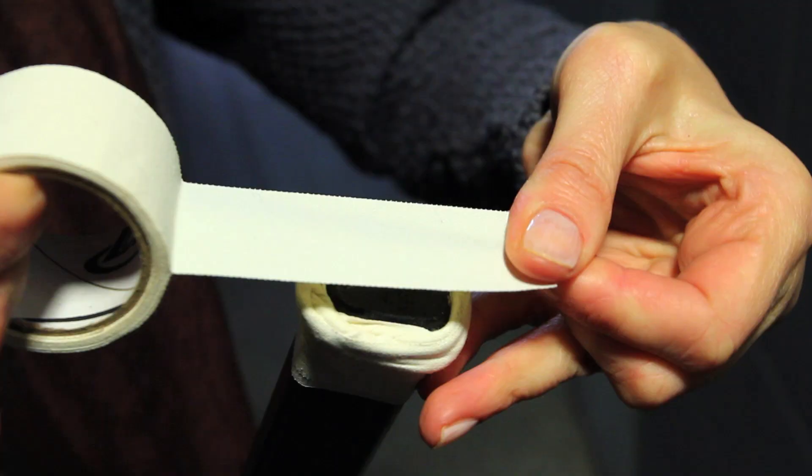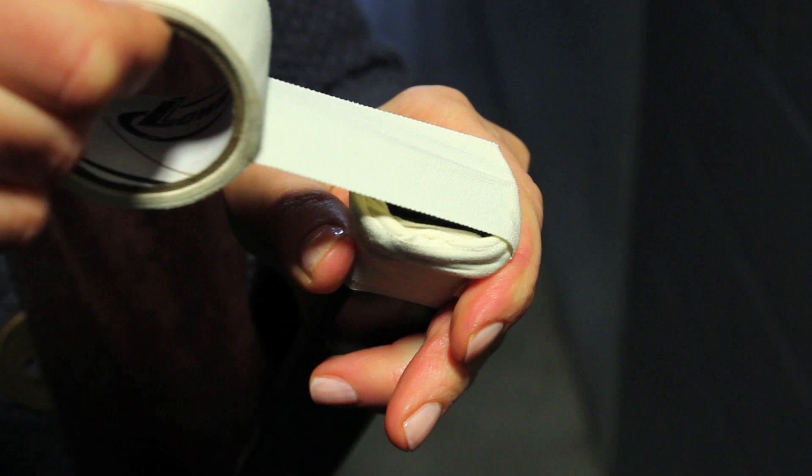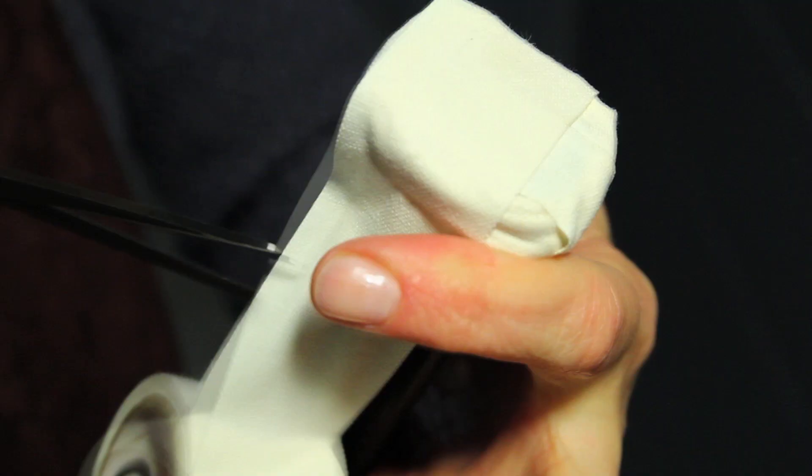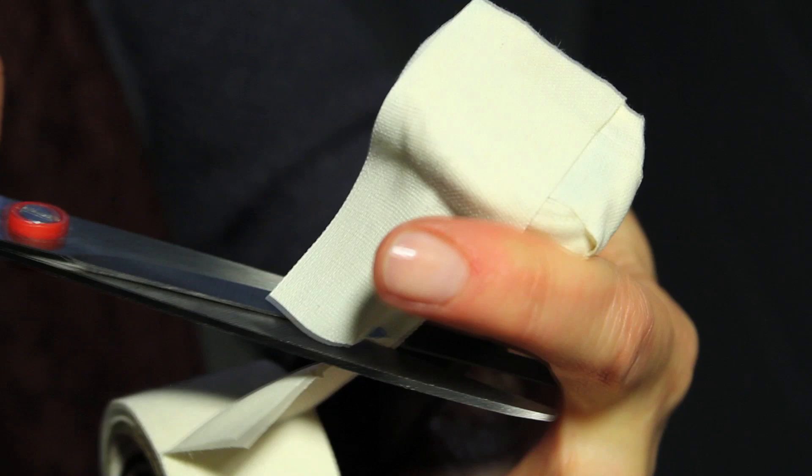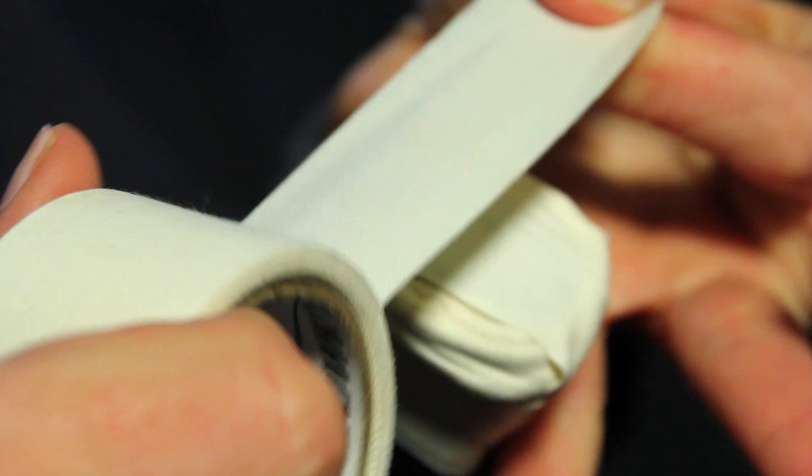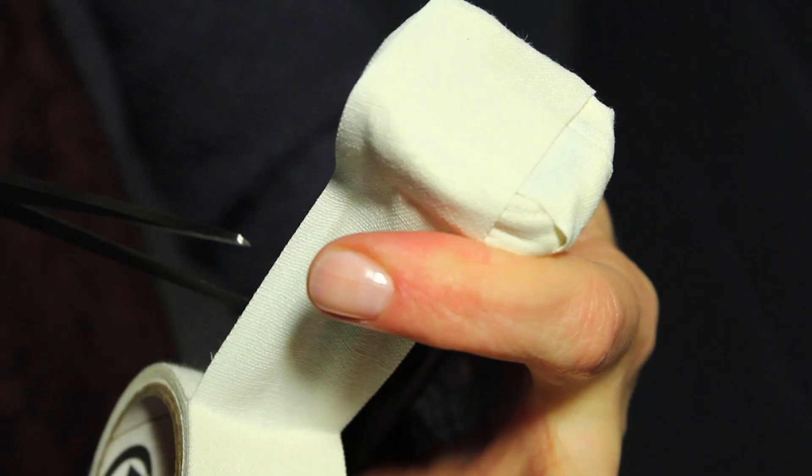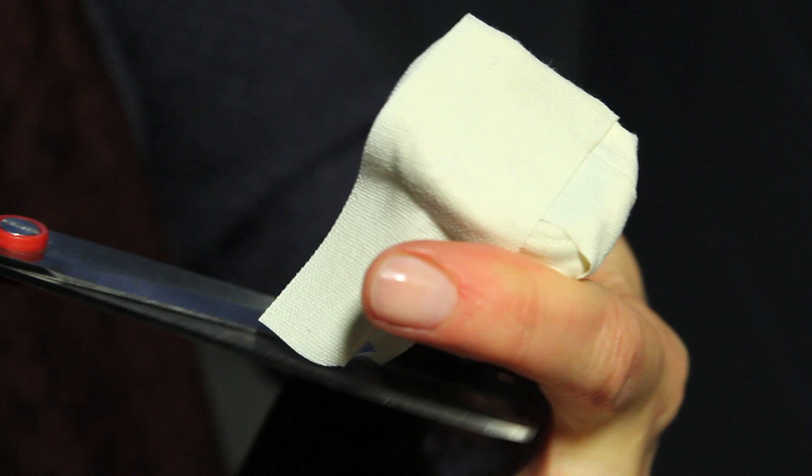Once we have that done, just to secure it all into place, we're going to put a cross over the top of it. So one piece of tape this way, and then just one piece of tape crossing over the other way. Smooth that all down.